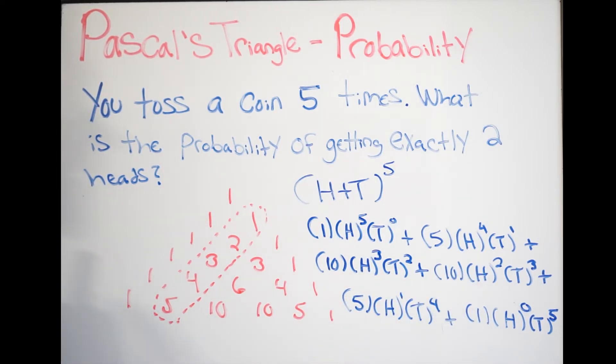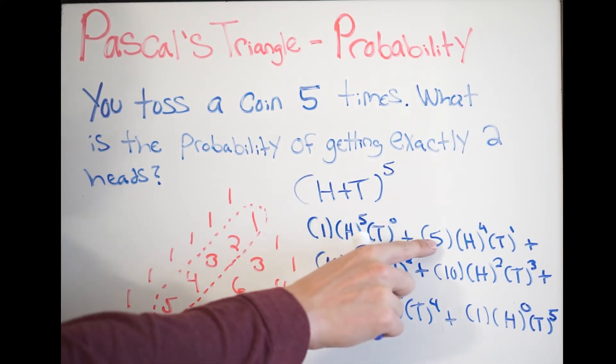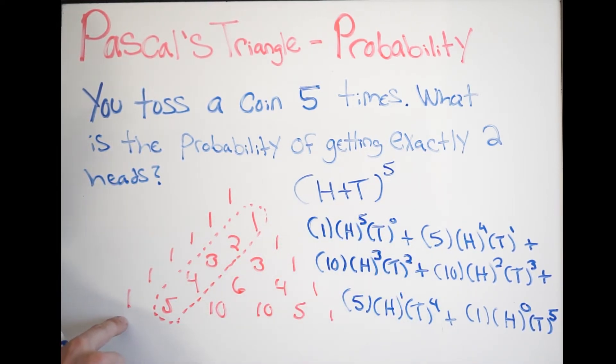Now, what are my total number of possible outcomes? And to figure that out, it's very simple. All you have to do is add up your coefficients. So, again, we use the coefficients in this row. We're just adding one plus five plus ten plus ten plus five plus one. When you do that, you're going to get 32. So, that tells us there are 32 possible outcomes.